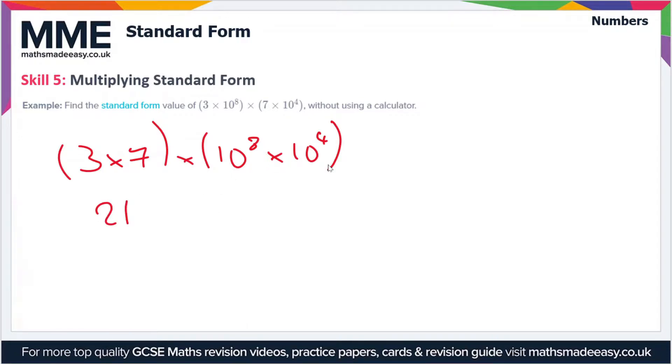Then we have 10⁸ times 10⁴. Now if you know your indices rules, you've got a^x times a^y, that's equal to a^(x+y).